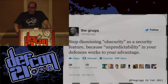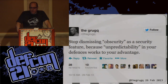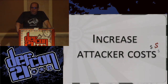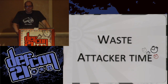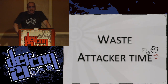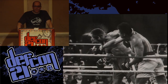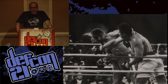There's a guy that everyone follows on Twitter — The Grugq. He said in one of his quotes: 'Stop dismissing obscurity as a security feature because unpredictability in your defense works to your advantage.' We can increase attacker costs by being unpredictable. We can waste attacker time — make an attacker spend three hours attacking a website that should take 15 minutes. Why should we just stand there and let someone smash us in the face? We should be more active in our defense.